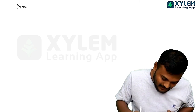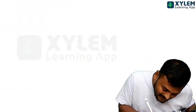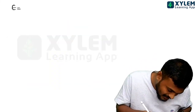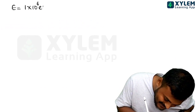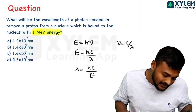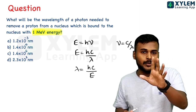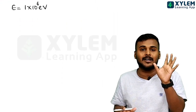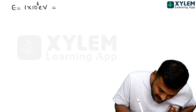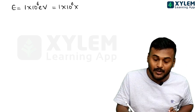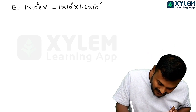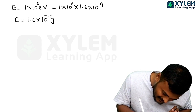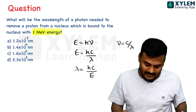Lambda equals hc by E. First, energy is given as 1 mega electron volt, which equals 1 into 10 raise to 6 electron volts. Converting: 1 electron volt equals 1.6 into 10 raise to minus 19 joules, so E equals 1.6 into 10 raise to minus 13 joules.